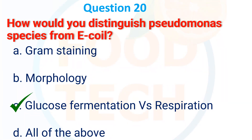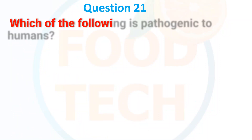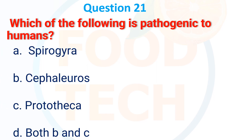Which of the following is pathogenic to humans? A. Spireal, B. Cephalosporin, C. Prototheca, D. Both B and C. The answer is A: Spireal.